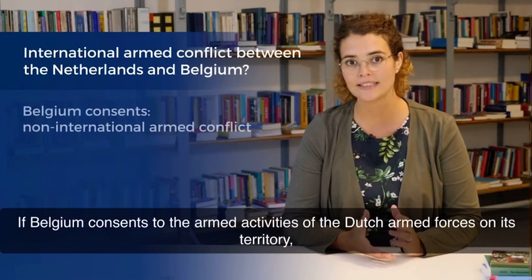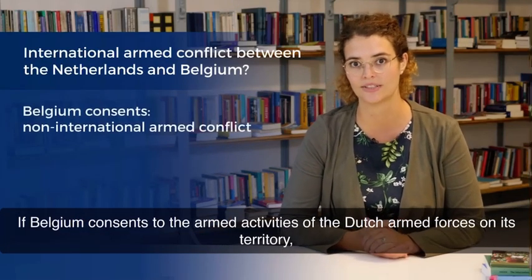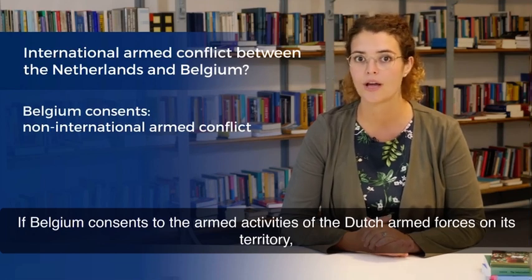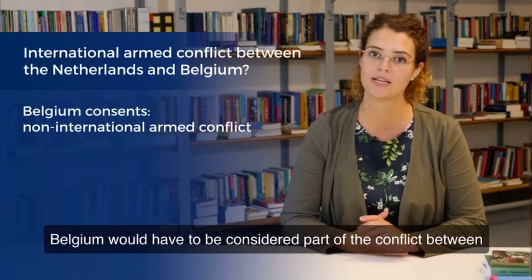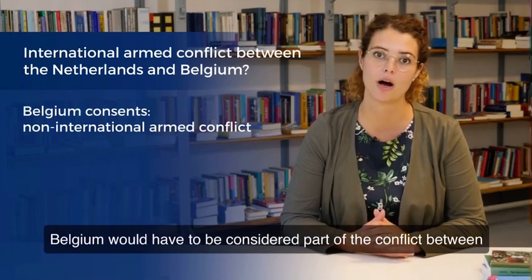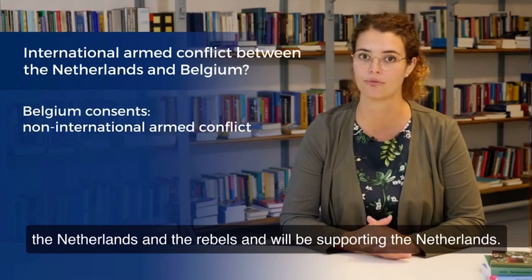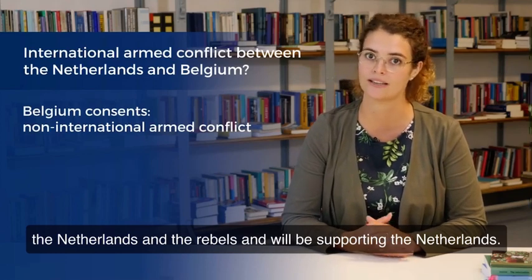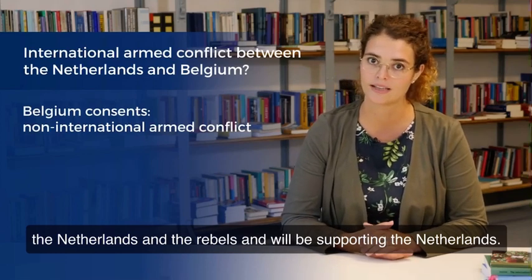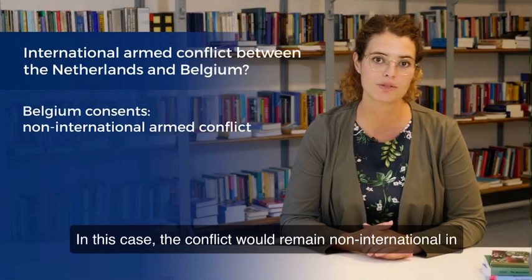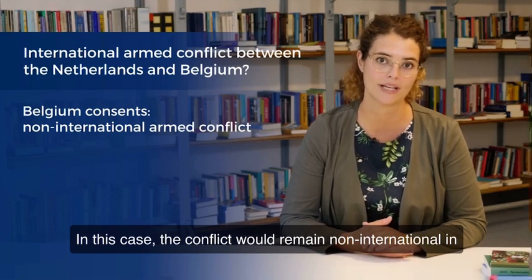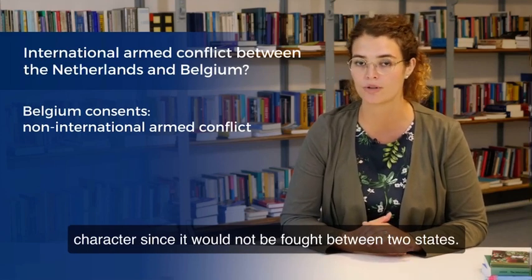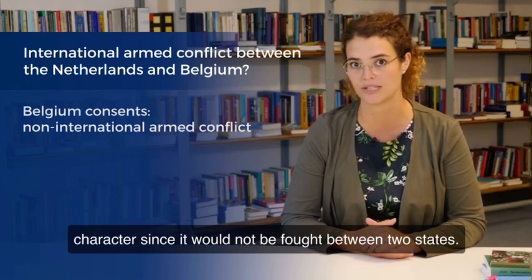If Belgium consents to the armed activities of the Dutch armed forces on its territory, Belgium would have to be considered part of the conflict between the Netherlands and the rebels, and would be supporting the Netherlands. In this case, the conflict would remain non-international in character, since it would not be fought between two states.